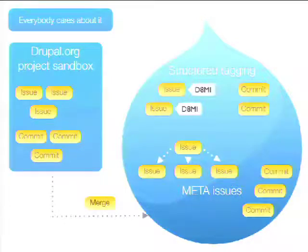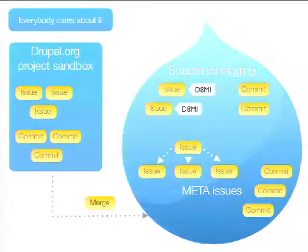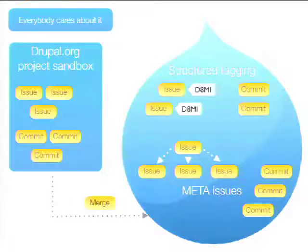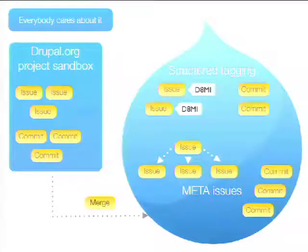There's also the meta issues approach, which the Entity API work uses. They have a meta issue that summarizes all the problems and links off to sub-issues, gets follow-ups and followers, and sometimes posts comment summaries of what happened. It also works in the core issue queue and gets commits individually there.